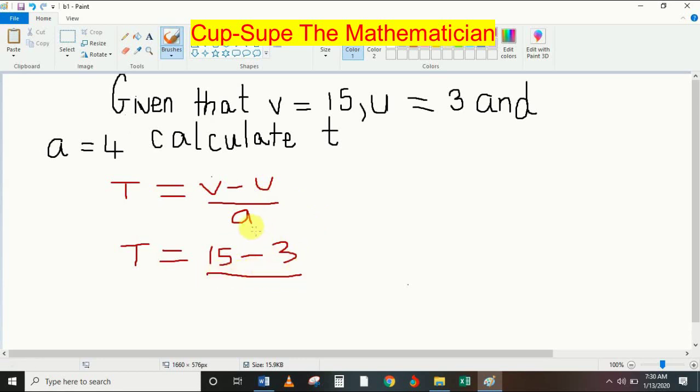What is the value of A? A is 4. So I'm going to write 4 right here. So now I have 15 minus 3 over 4.